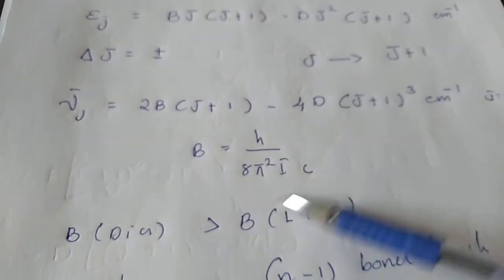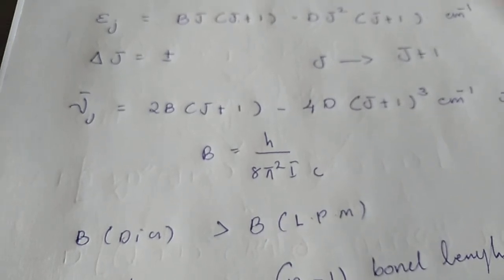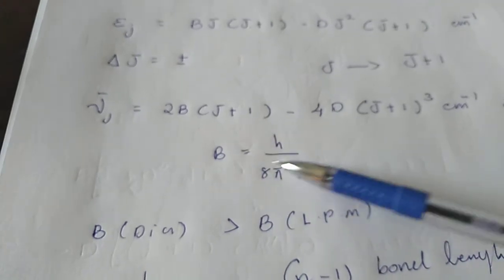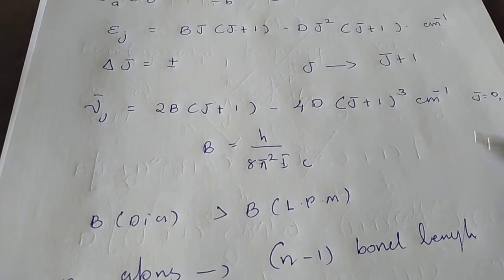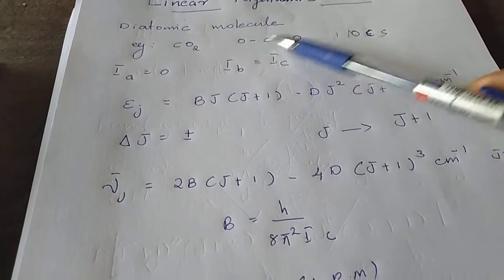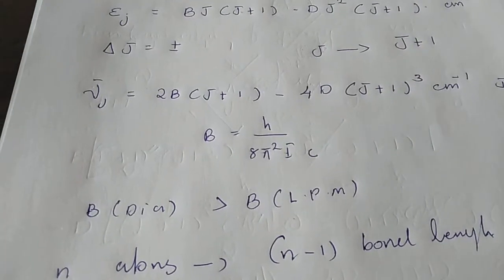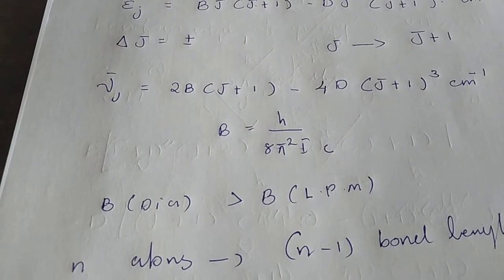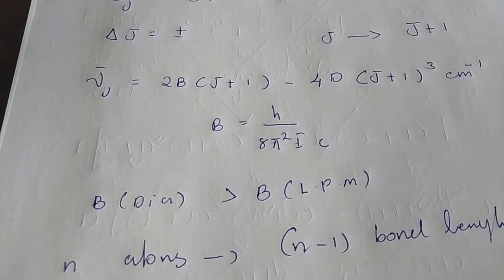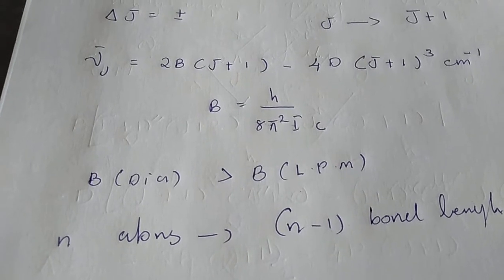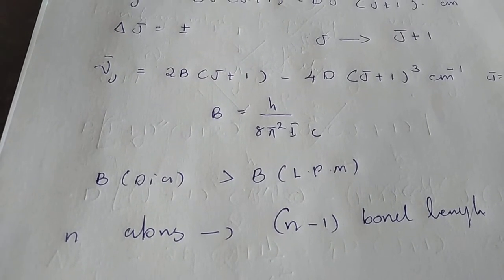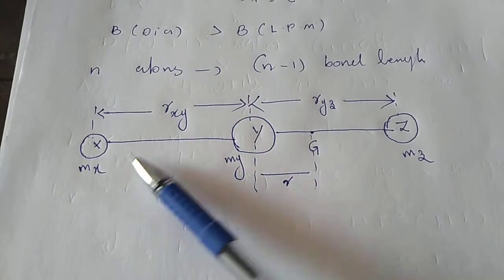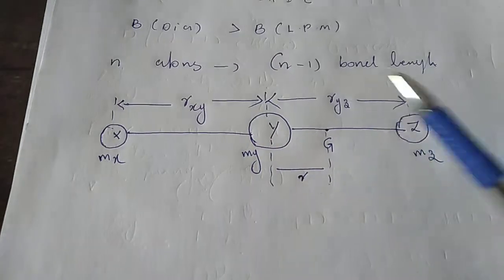For a linear polyatomic molecule with N atoms, the number of bond lengths is N−1. For example, CO2 has N = 3 atoms and N−1 = 2 bond lengths. For a general linear triatomic molecule XYZ, such as OCS which is microwave active, we consider the three different atoms X, Y, and Z.